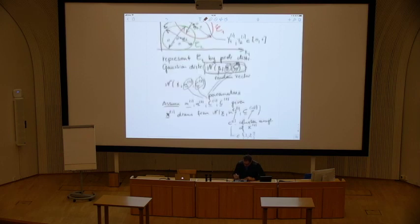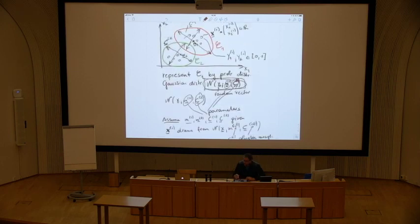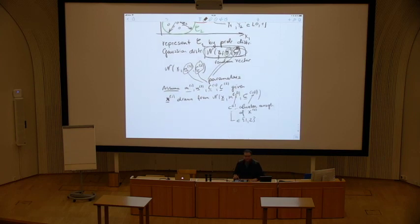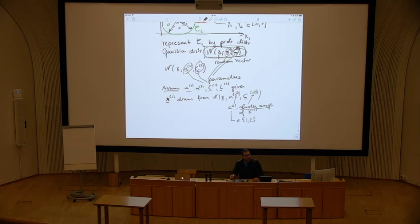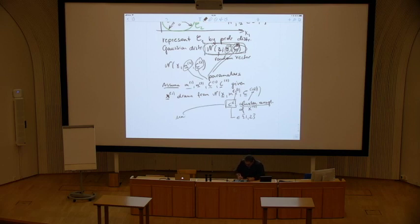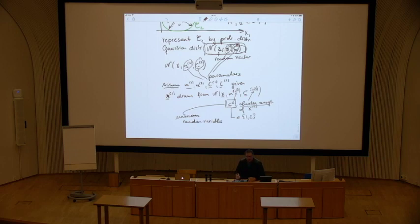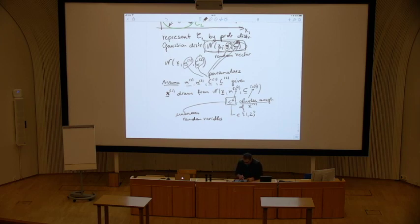Do we know the cluster assignment? Do we know from which cluster a data point has been drawn? Well, what is the goal of clustering? To find out the cluster assignments — exactly. So the goal of clustering is to find these cluster assignments; we don't know them, they are unknown. However, we can model anything as random variables. These cluster assignments are random variables which are not seen — they exist somewhere but we don't observe their realizations. All we observe is the realization of the feature vector random variable.